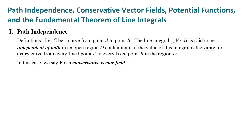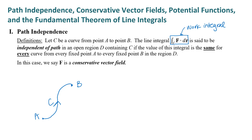We have several definitions here. The first one is 'independent of path' and 'conservative vector field.' I'm going to draw some pictures to illustrate what this definition is saying. Let C be a curve from point A to point B. The line integral — the integral over C of F dot dr — is a work integral. It is said to be independent of paths on an open region D containing C.